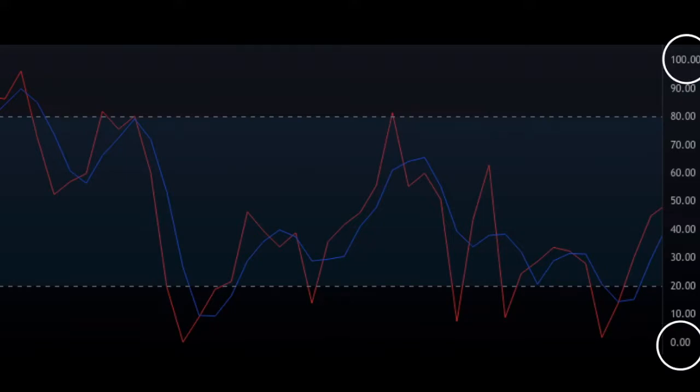No matter how much the price on the chart moves up or down, it will always fluctuate between the levels of 0 and 100.